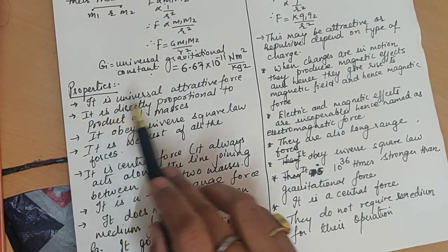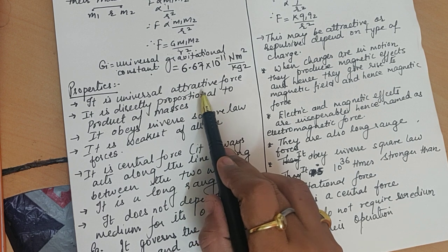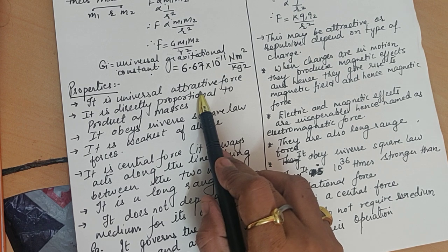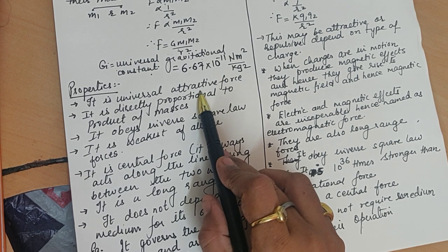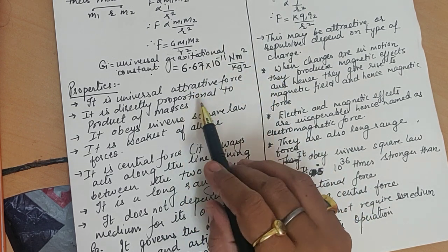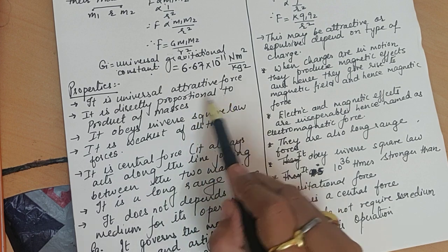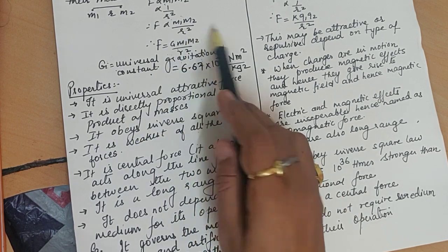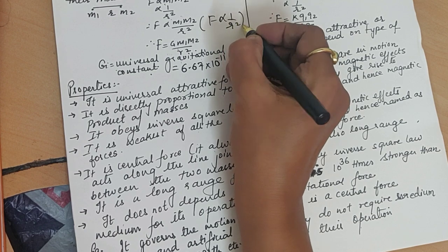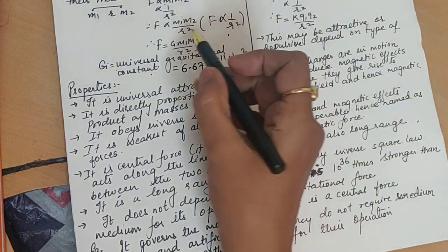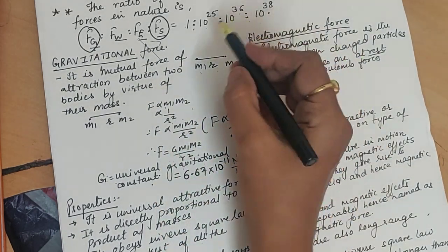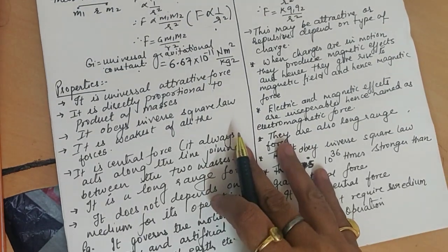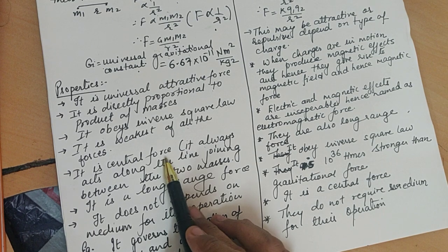Properties of gravitational force: It is a universal attractive force — it always attracts two masses toward each other, which is why we exist on Earth's surface. It is directly proportional to the product of masses, and it obeys the inverse square law (F ∝ 1/r²). It is a central force — it always acts along the line joining the two masses. It is the weakest of all fundamental forces.